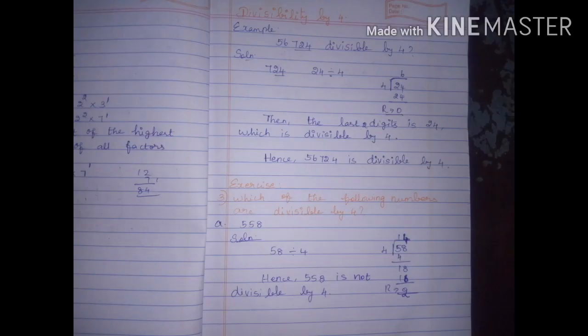Divisibility by 4 - what is the rule? A number is divisible by 4 if the number formed by the last two digits is divisible by 4. So, if the last two digits of a number - whether it has 4, 5, or 6 digits - are divisible by 4, then the remainder value is 0 and it is divisible by 4.